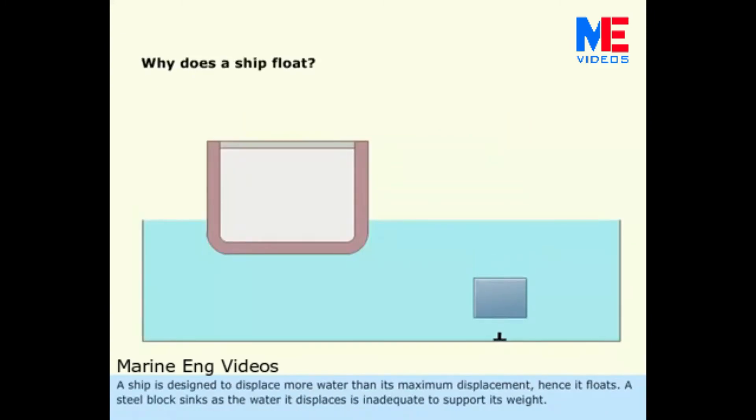A ship is designed to displace more water than its maximum displacement, hence it floats. A steel block sinks as the water it displaces is inadequate to support its weight.